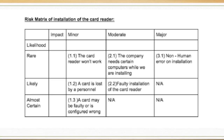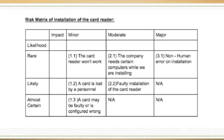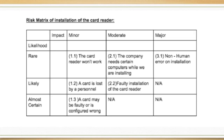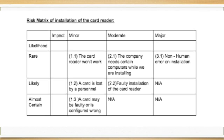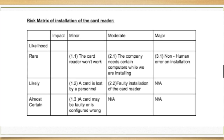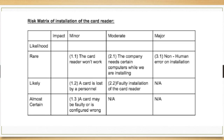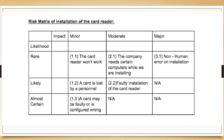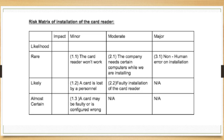At medium likelihood and minor impact, we have a card lost by personnel. If this happens, we will simply find the ID of the card, deactivate it, and give them a replacement. At high likelihood and minor impact, we have a card that is faulty or configured wrong. If this happens, the card should be replaced immediately and will be recycled or fixed later.